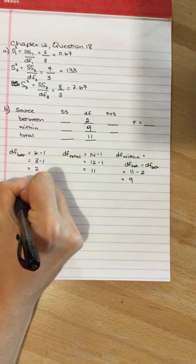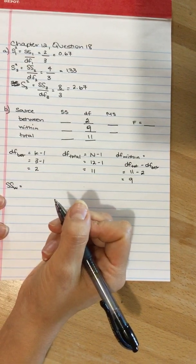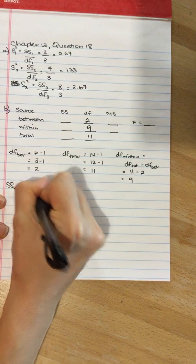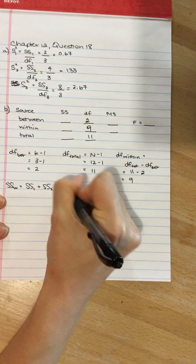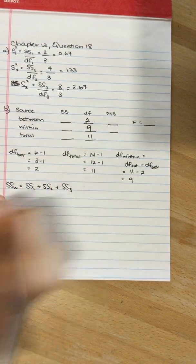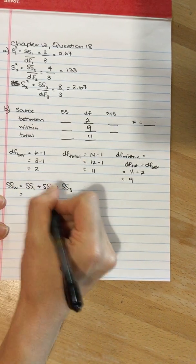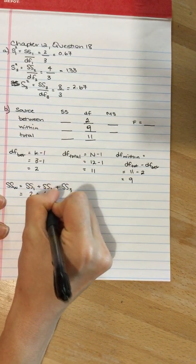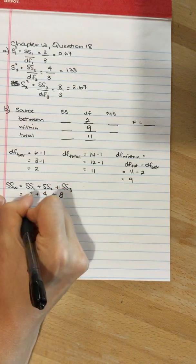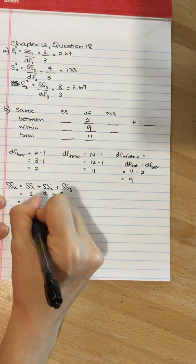Let's start with the sum of squares within. The sum of squares within equals the sum of squares one plus the sum of squares two plus the sum of squares three. Those values were given to us, two plus four plus eight, and that's 14.